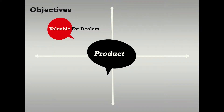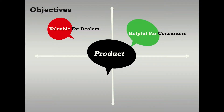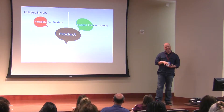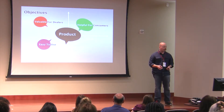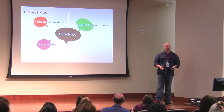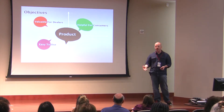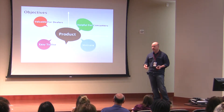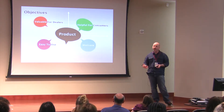We had some objectives to create this product. First, we had to create value for the dealers — somebody had to buy it. We had to create a product that somebody would buy, because we can't just build it and throw it out there. It'd be great to do it all for free, but that's just not the way it works. Then we had to make it helpful for consumers — take that anxiety out of buying a car. We needed to make it easy to use, and we needed to motivate the salespeople to actually use it. These are the things we've iterated on over two years.